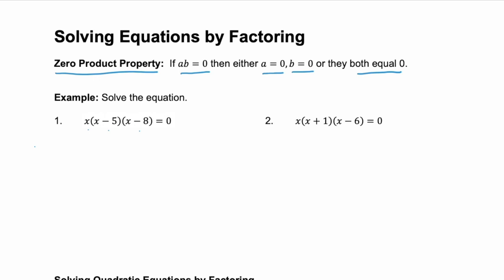For that to be true, either the first factor, x, has to equal zero, or the second factor, x minus 5, has to equal zero, or that third factor, x minus 8, has to equal zero.